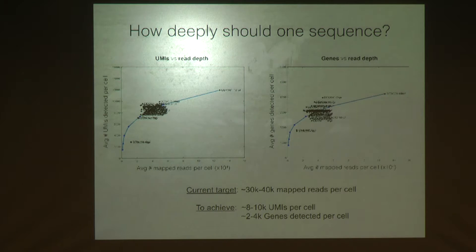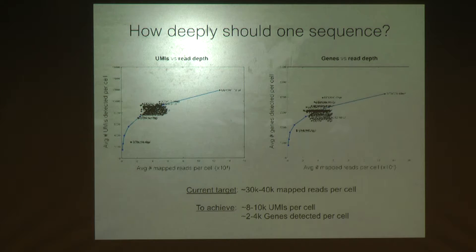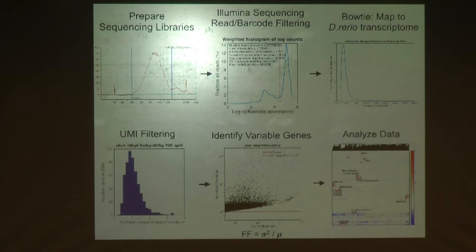At 30,000–40,000 mapped reads per cell — about twice that many raw reads — we're getting between 8,000 and 10,000 UMIs and up to 4,000 genes per cell for the zebrafish data. That's our practical approach to where we settled on this question. Of course, it depends on how different your cells are from each other. If you're studying a population where the cells are all very similar and you're looking for tiny differences, you might need more sequencing depth. In our case, we're looking at different tissues from a whole embryo, so the differences are quite robust and you can get away with less sequencing.